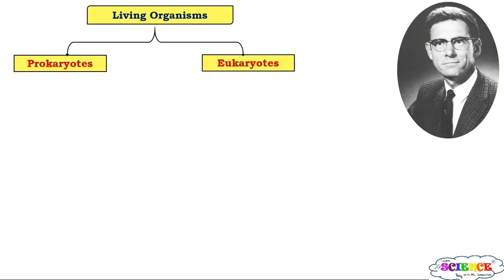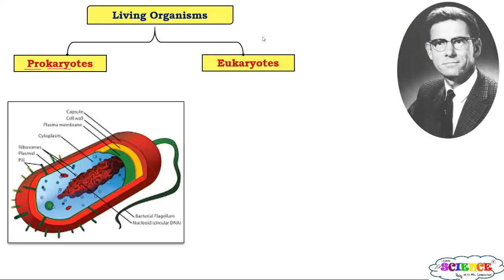First, he classified organisms on the basis of cell structure into two types: prokaryotes and eukaryotes. 'Pro' means primitive and 'karyo' means nucleus. All organisms in which cells had a primitive nucleus — or well-defined nucleus was absent — are called prokaryotes. For example, bacterial cells. In bacterial cells, DNA genetic material is present but it is not inside a nucleus. They don't have a well-defined nucleus.